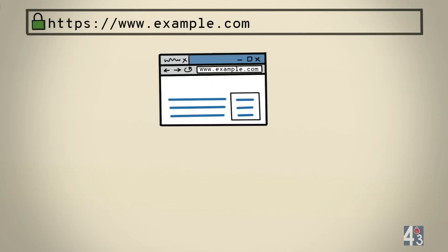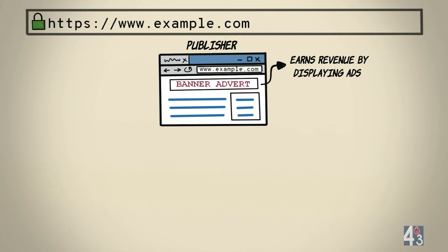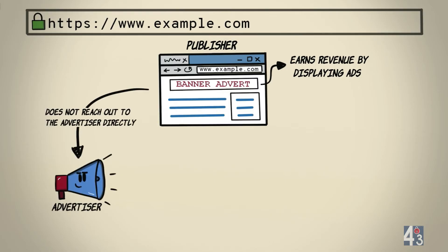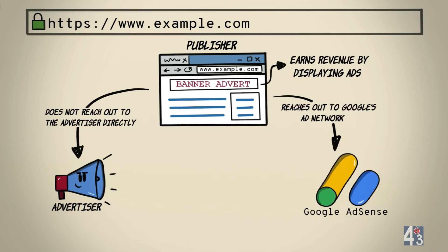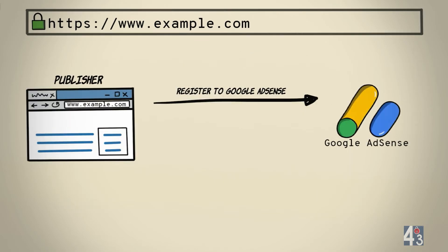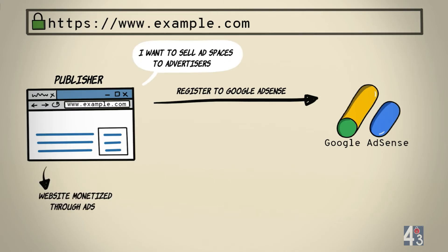People or companies handling websites, web applications, or blogs are called publishers. Most publishers, apart from various other business models, resort to earning revenue through displaying ads on their website. Rather than searching or reaching out to companies for sponsorship, they reach out to third-party advertising networks like Google's. Publishers make it known through Google's AdSense program that they are willing to sell ad spaces to advertisers, and this way they monetize their website through ads.